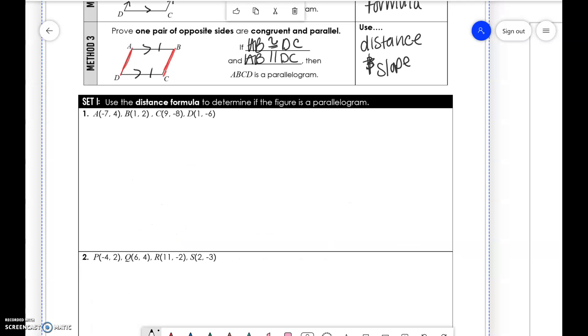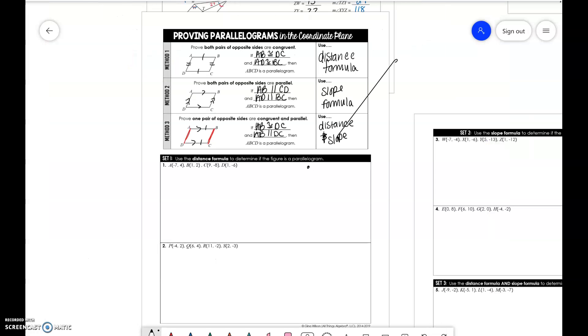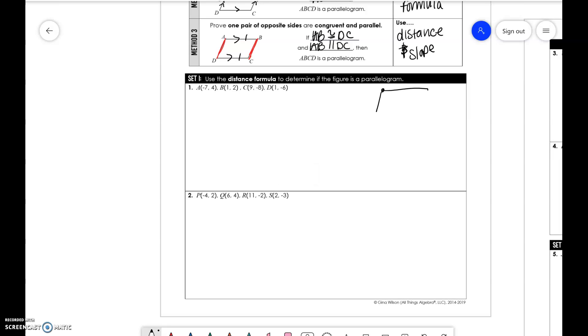When we do a parallelogram, we need to make sure that you label it the correct way. A, B, C, D—you need to go around in one cohesive rotation. You can't skip around. It has to be in a specific order. You're going to find the distance of AB, the distance of BC, the distance of CD, and the distance of AD.